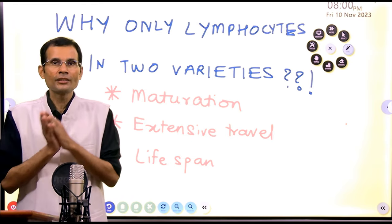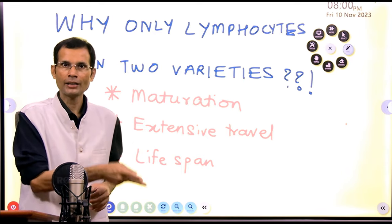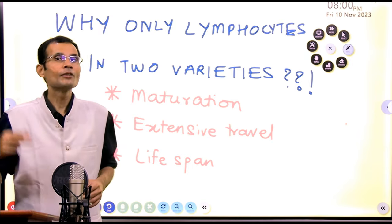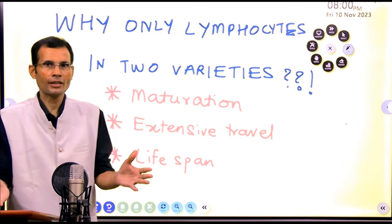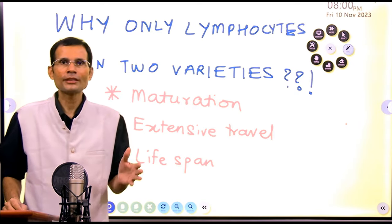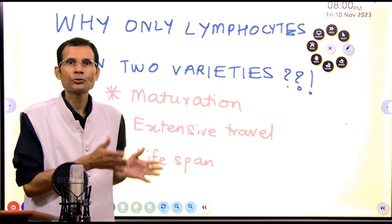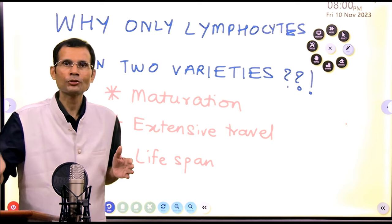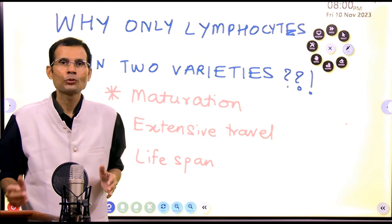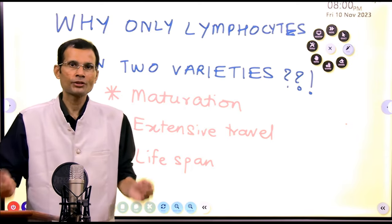Why don't you see any other blood cell type in small and large varieties? Why do other blood cell types not come in two varieties? You don't see small or large RBCs, you don't see small and large neutrophils, small and large eosinophils, or small and large platelets for that matter.